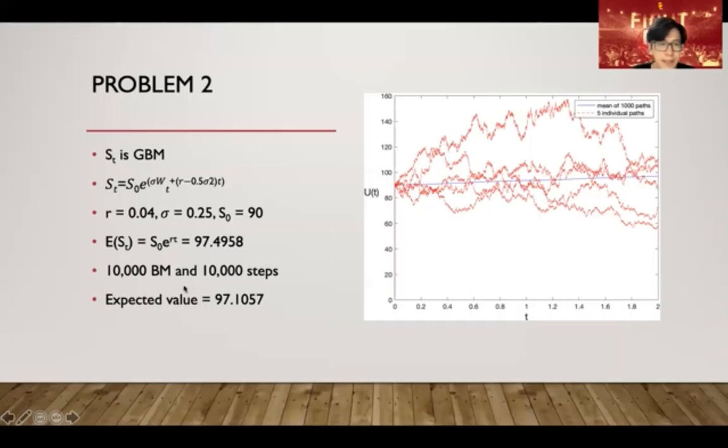As the number of Brownian motions, if we set the number of Brownian motions bigger enough, I think it's ultimately going to be the same as 97.4958. If we set the number of Brownian motions less, a little bit lesser around 5,000, then the result will be 96 something. I think ultimately it will be matched.